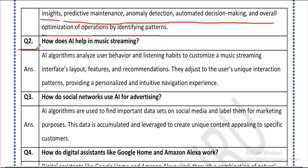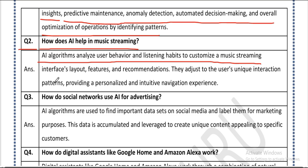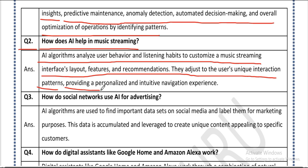Question two: how does AI help in music streaming? Answer: AI algorithms analyze user behavior and listening habits to customize the music streaming interface layout. Features and recommendations adjust to the user's unique interaction patterns, providing a personalized and intuitive navigation experience.